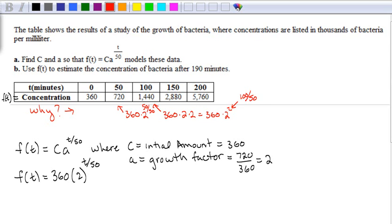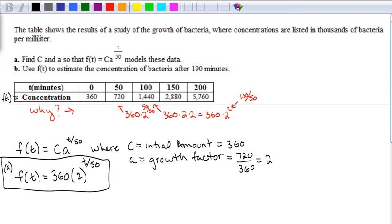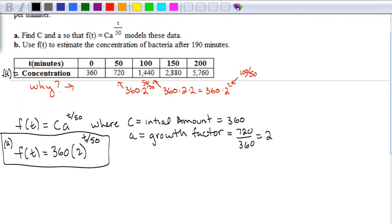Okay. By the way, that answers part A of this question. How do we do part B? Well, now all we have to do is use f(t) to estimate the concentration of bacteria after 190 minutes. So we have f(t) and t are the only variables left. We know that the time is 190 minutes, and we're looking for f(t).